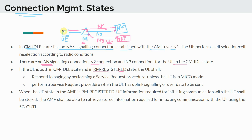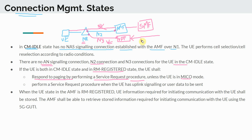When the UE is in CM Idle and registered, it is registered in the AMF but not actively connected to the network. The UE shall respond to paging by performing a service request procedure. If there is incoming downlink data for a subscriber, the UPF tells the SMF, which reaches out to the AMF with a downlink data notification, telling the AMF to page the subscriber.